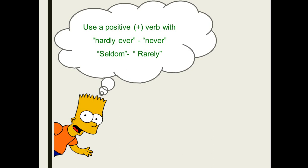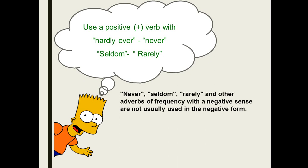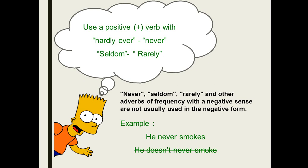Now, we have here: hardly ever, never, seldom, and rarely. All of these words give the negative sense in the sentence. So we don't need any other negative words or negative helping verbs next to the main verb. When I have 'never,' 'seldom,' 'rarely,' 'hardly ever,' I should never add 'don't' or 'doesn't,' because they already mean 'not.'